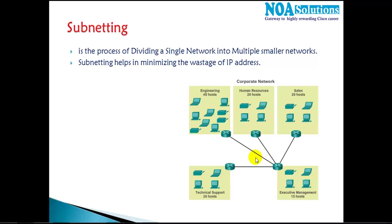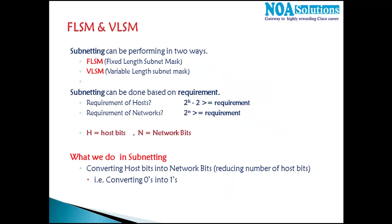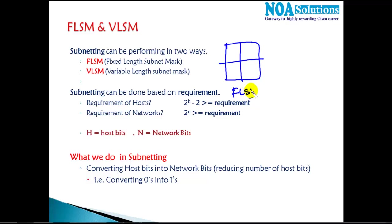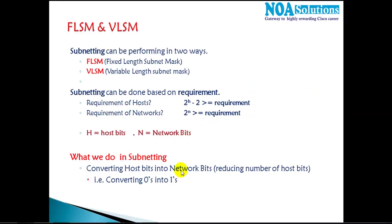In the previous section we saw an introduction to subnetting, where subnetting is a method of dividing one single network into multiple small networks. It majorly minimizes the wastage of IP addresses. There are two methods: FLSM, where we divide the network into equal sizes, and VLSM, where sizes may or may not be equal. We use specific formulas for calculations and convert host bits — zeros into ones.